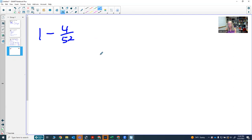The first thing to do is to realize that you can write any whole number as a fraction by putting it over 1, then find the lowest common denominator. So I can rewrite the number 1 as 1 over 1 minus 4 over 52.